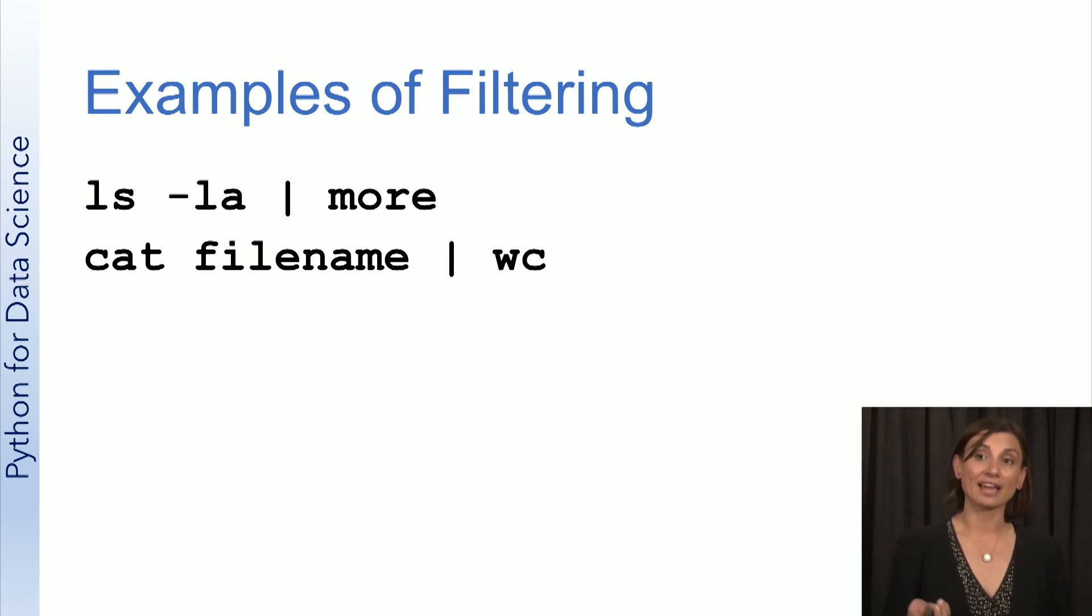The next one, we have cat filename piped into wc. Here, we'll see the lines, words, characters, the number of lines, words, and characters in the output of cat, namely the contents of filename.